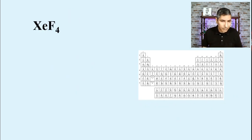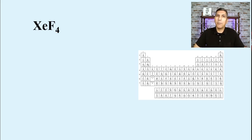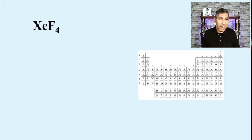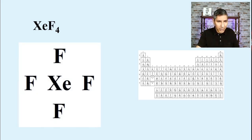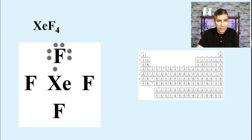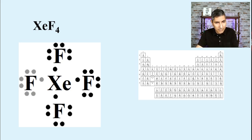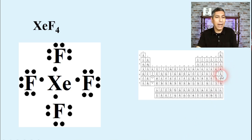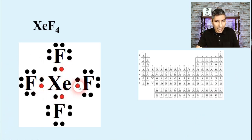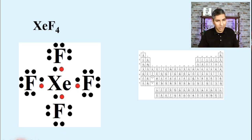Let's try one more example: xenon tetrafluoride. You might wonder — xenon is a noble gas; can noble gases make compounds? Usually they don't, but there are a few noble gas compounds, and xenon tetrafluoride is one of the main ones. Xenon goes in the middle, the four fluorine atoms surround it. Fluorine has seven valence electrons, so seven dots per fluorine — 28 dots total. Xenon has eight valence electrons as a noble gas. Assigning xenon's dots: one, two, three, four — and we've already run out of room with five, six, seven, and eight still to place.